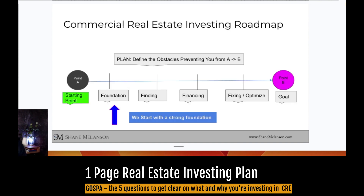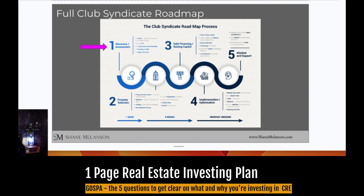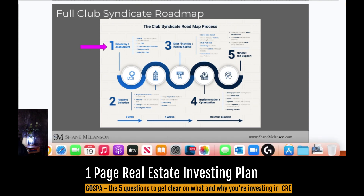Here is the commercial real estate investing roadmap. On the far left you have your starting point, point A. On the far right you have point B, which is your goal. In between are obstacles preventing you from getting from where you are to where you want to go. The foundation is what we cover today, and over the next videos we'll talk about how to find deals, how to finance them, and how to fix them. You go from getting clarity and discovering where you're at, then into property selection, debt, raising capital, equity, and finally implementation and optimization.